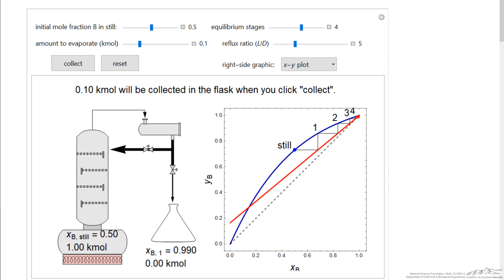And then as we collect, these compositions shift on the x-y plot. So now the mole fraction in the still is decreasing and also the mole fraction in the distillate is decreasing.